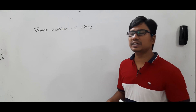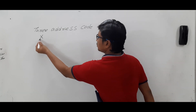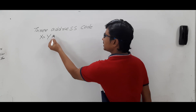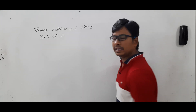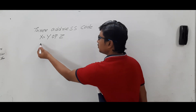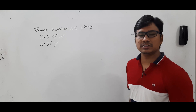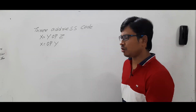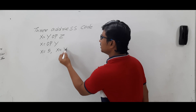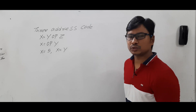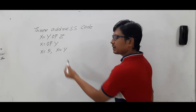Let me discuss various instructions and how we represent them in the three address code. A three address code consists of x = y operator z, where operator is a binary operator, y and z are the source operands, and x is the destination operand. For a unary operation: x = operator y, where operator is a unary operator. For assignment or copy instructions, we write x = 5 or x = y, where 5 is a constant value to store in operand x, or the value in y is assigned to x.